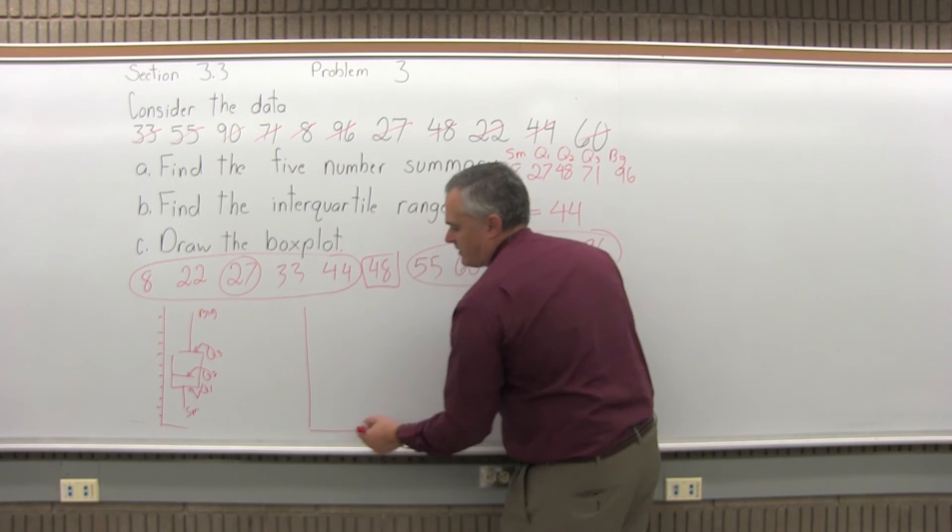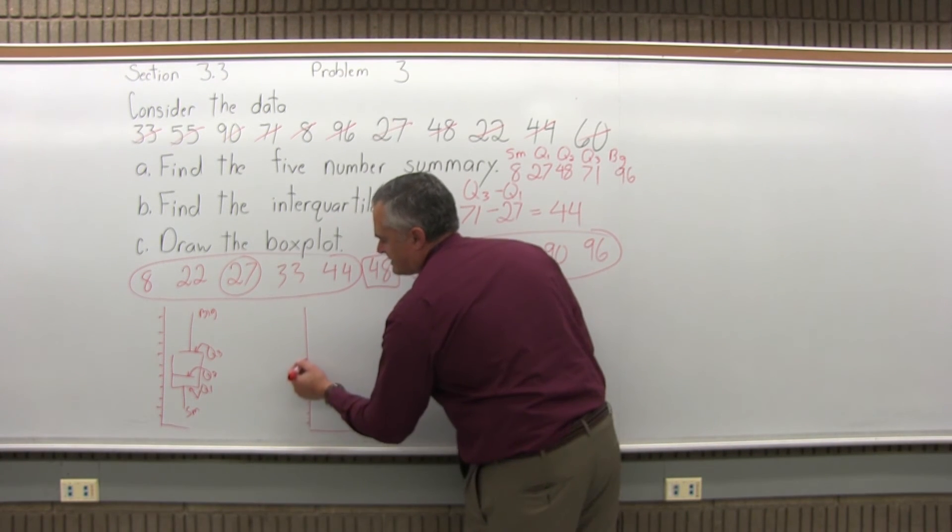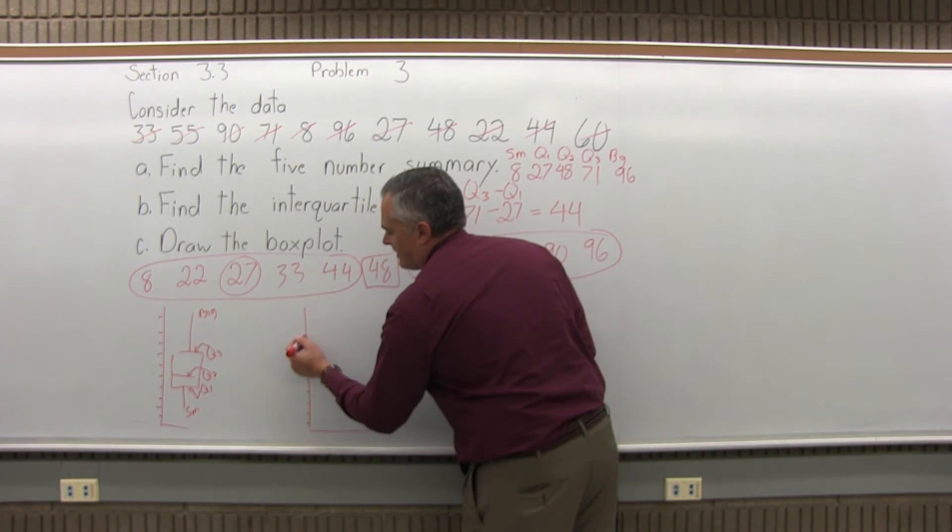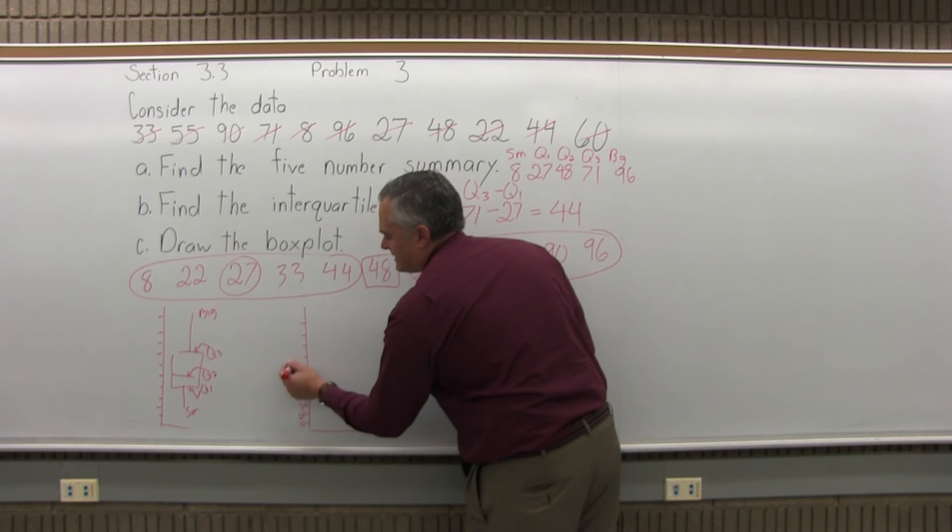I can make it vertical. 1, 2, 3, 4, 5, 6, 7, 8, 9, 10. And I'll label that as 10, 20, 30, 40, 50, 60, 70, 80, 90, 100.